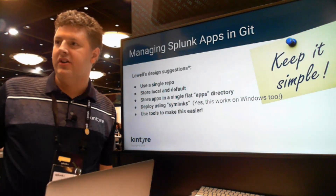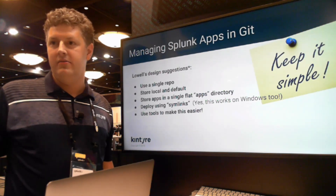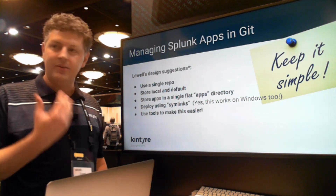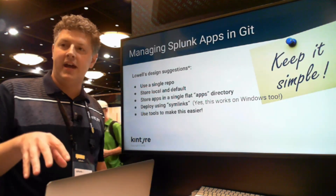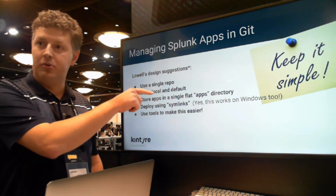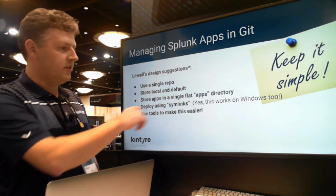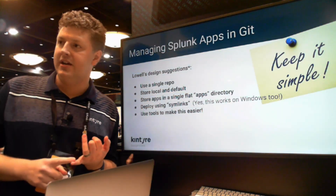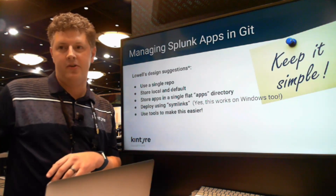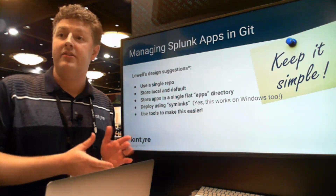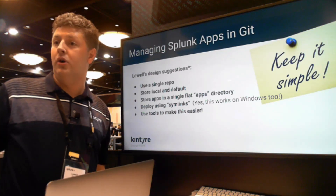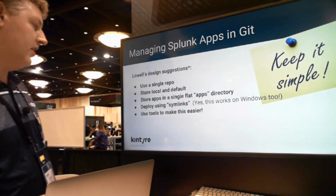If you're getting started, to get the proper answer for a specific scenario requires a lot more discussion, but a simple way to get started is to follow these guidelines. Instead of putting all the apps in different repos, put the apps in one repo — it's a lot simpler. You can store both local and default. Store apps together: instead of having three different versions of the Windows TA, try to consolidate it down to one version. Often you can have extra configuration files in Splunk that it will flat out ignore if it doesn't need them — just take advantage of that.